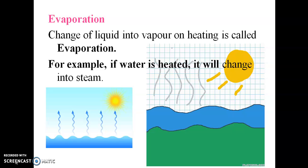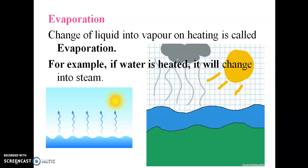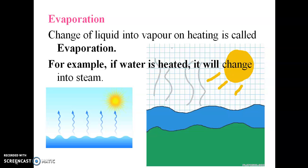Next is evaporation. The change of liquid into vapor on heating is called evaporation. For example, if water is heated, it will change into steam. When water is boiled, it becomes steam.